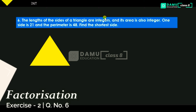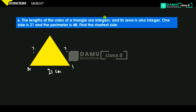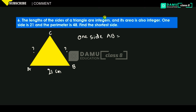Let's take this side as 21 centimeters. We don't know what the other two sides are. Let's take triangle ABC where one side, AB, will be equal to 21 centimeters.